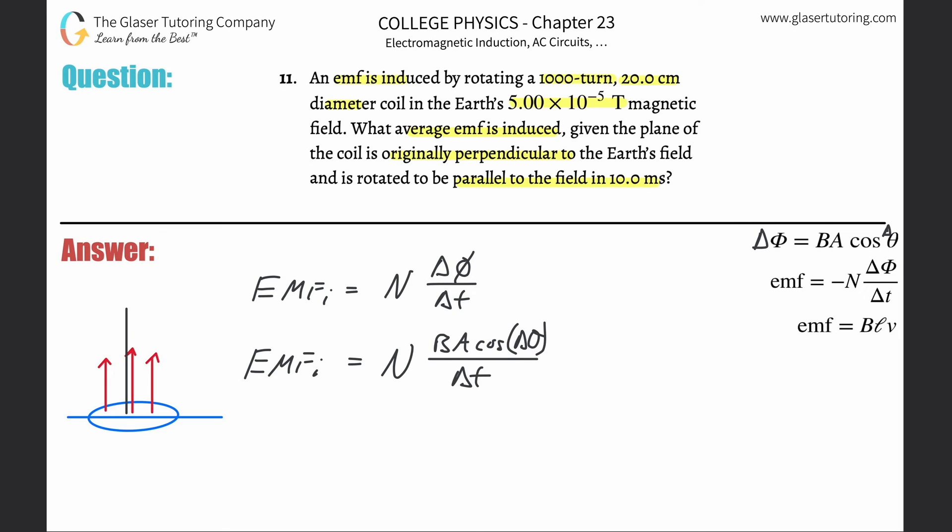And remember, this is the important angle, between the magnetic field vectors and the normal. So originally, the angle here between, it's not 90, it's actually zero, because we have to take it into account from the normal.